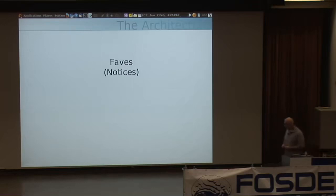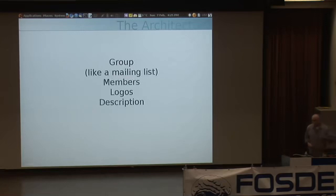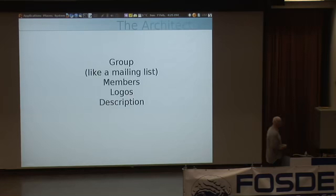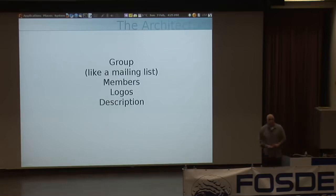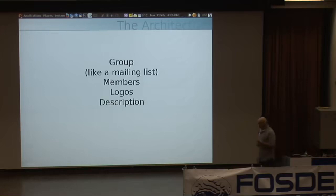One thing different about StatusNet from other status sharing systems is that we have a concept of groups. Groups are like an email mailing list — you can address a notice to a group and it gets distributed out to everyone in that group, whether or not they're individually subscribed to you. One of the largest groups on Identica is around Ubuntu — I think it's greater than 4,000 people on this distribution list. Groups have members, logos, descriptions, admin lists, and similar attributes.